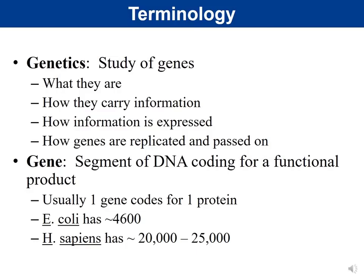The protein I studied in grad school was a transcription factor — a protein that regulates which genes are turned on or off — and the gene I studied actually formed three functional proteins expressed at different times during development, playing very different roles in regulating transcription. So while usually one gene codes for one protein, that's not always true. Later, when we talk about transcription and translation, you'll see why E. coli don't do alternative splicing.